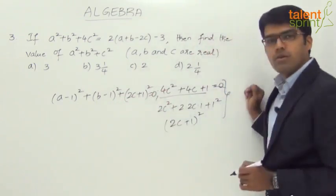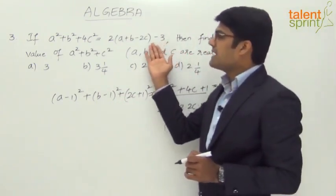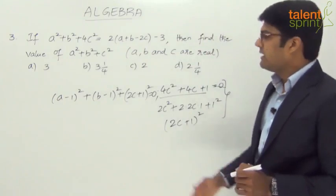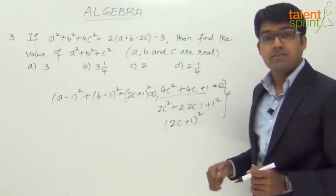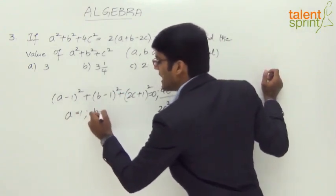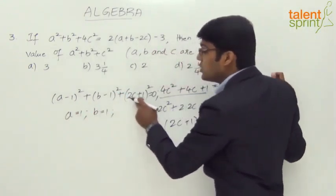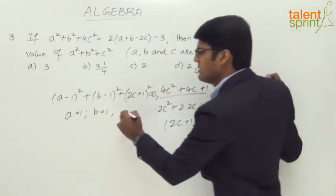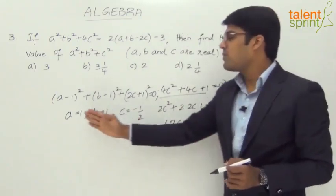This equals 0 since all the terms on the right hand side have been moved to the left hand side. If this equation has to be balanced to 0, a should equal 1, b also has to be 1. And what about c? 2c + 1 = 0 implies c = -1/2.